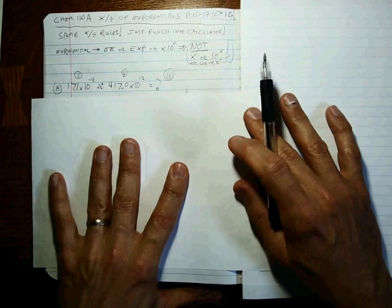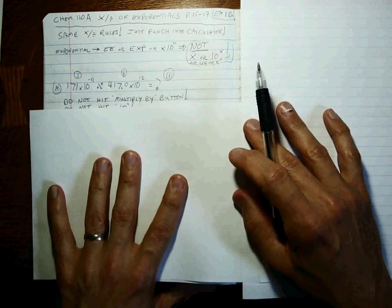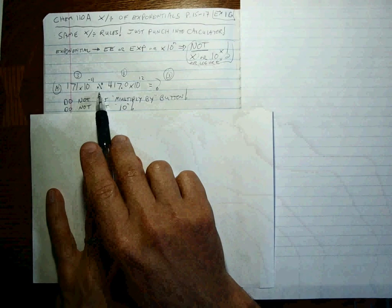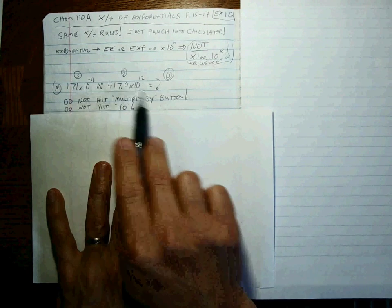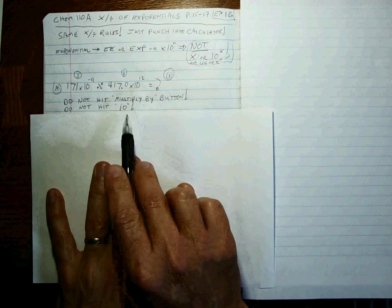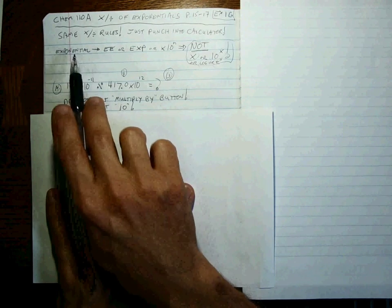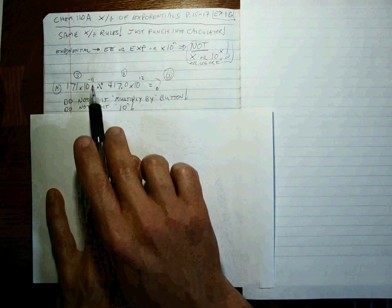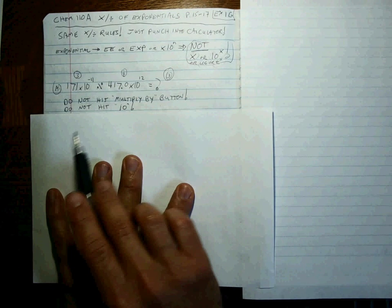Now remember, we are not going to multiply anything here. We don't hit the multiply by button. We don't type in the number 10.